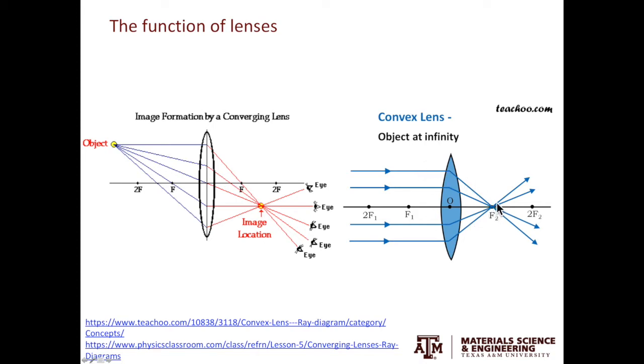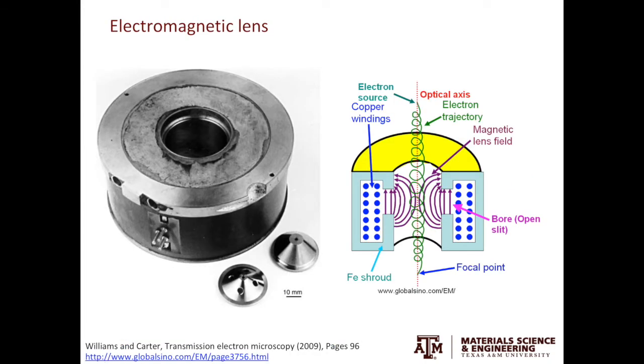In optical microscopes we use glass lenses to bend light. Glass lenses cannot bend electron beams, so inside TEM we use electromagnetic lenses to manipulate the path of electrons.